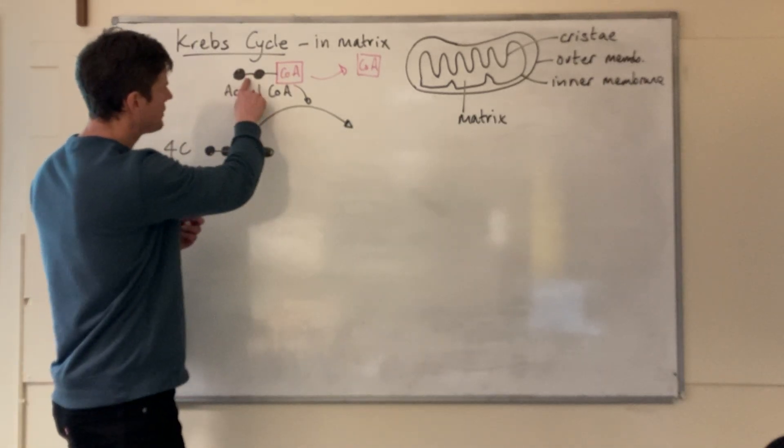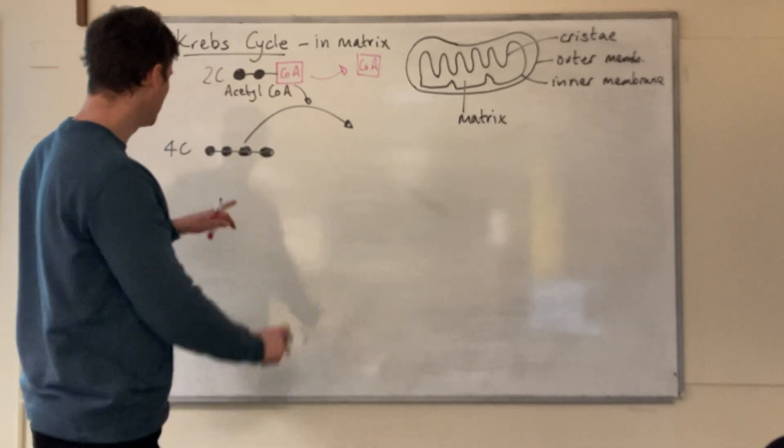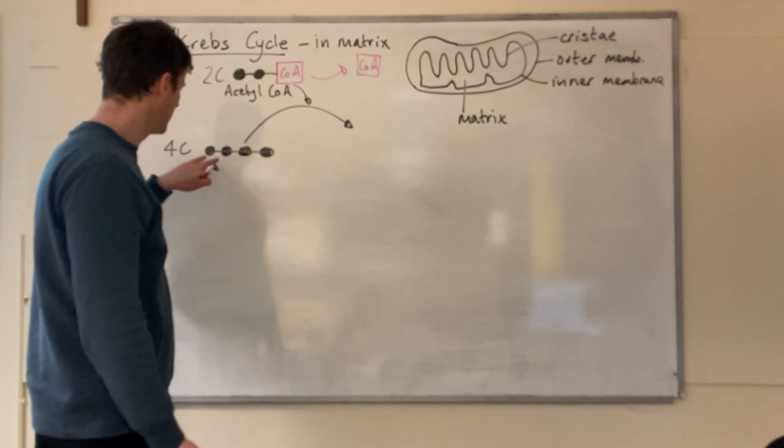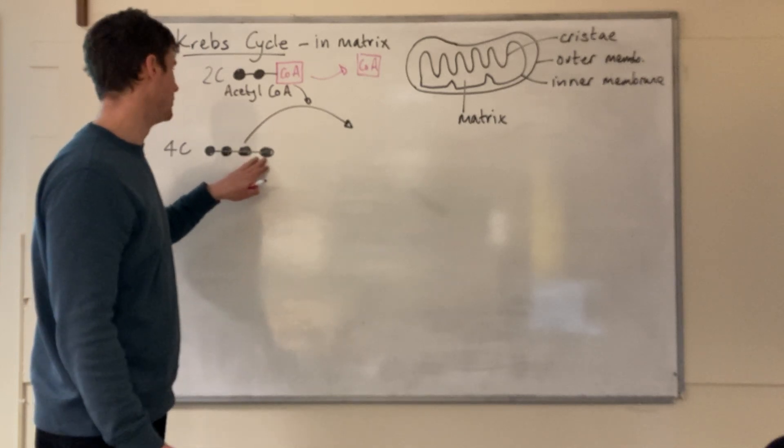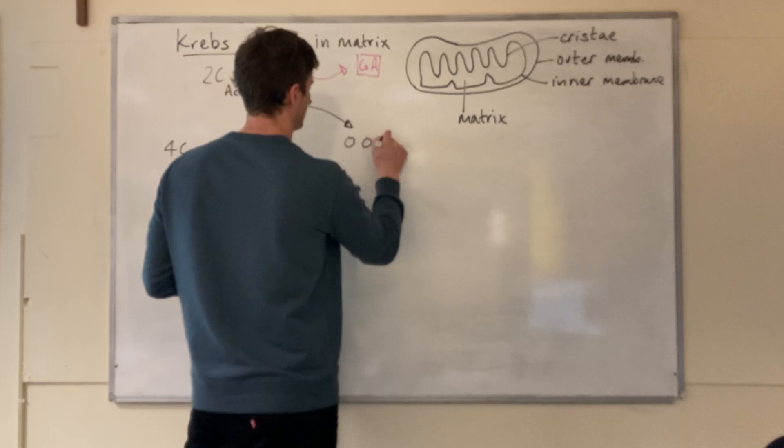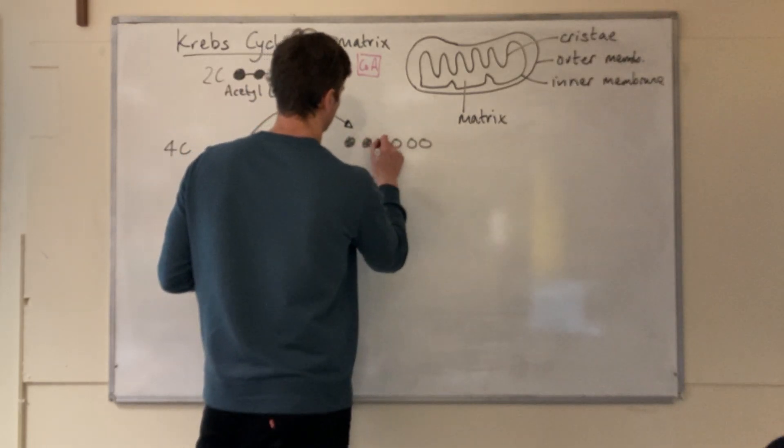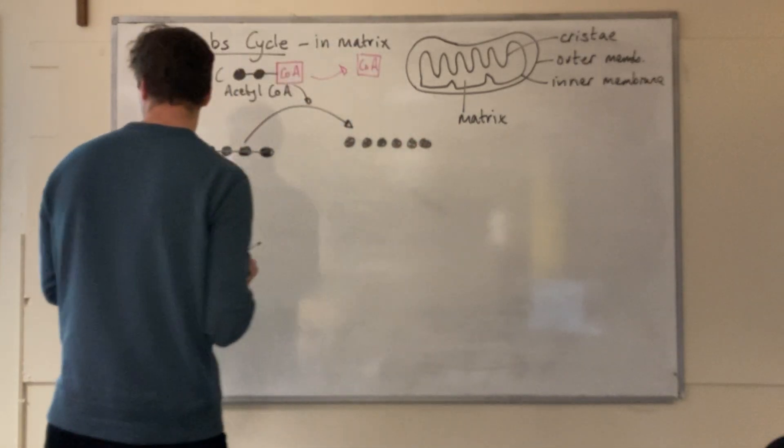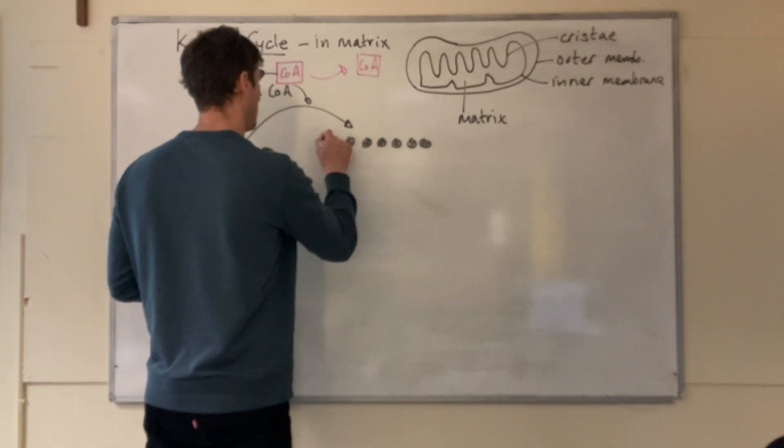We have this two carbon acetyl-CoA and it combines with a four carbon substrate that is produced at the end of the previous cycle. That produces two plus four, a six carbon molecule. In your notes, you can see we start with this six carbon molecule.